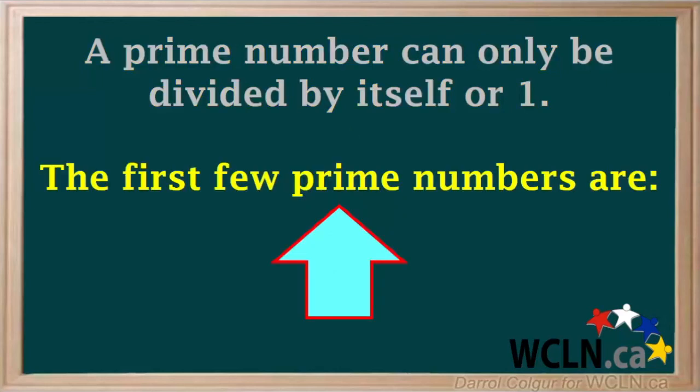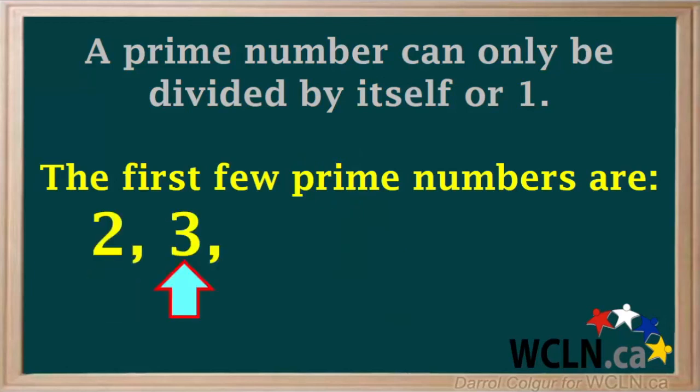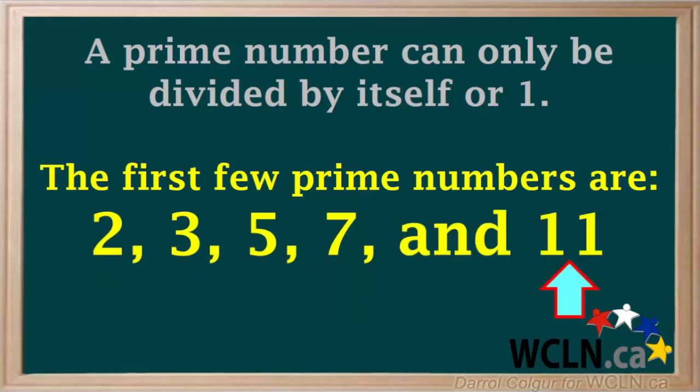We'll just consider the first few prime numbers here. They are 2, 3, 5, 7, and 11. It's really useful to memorize these.